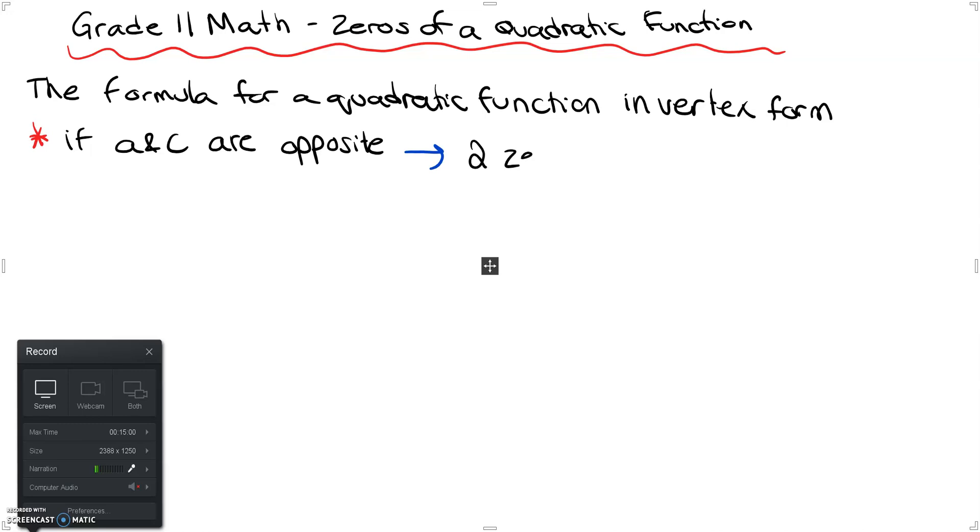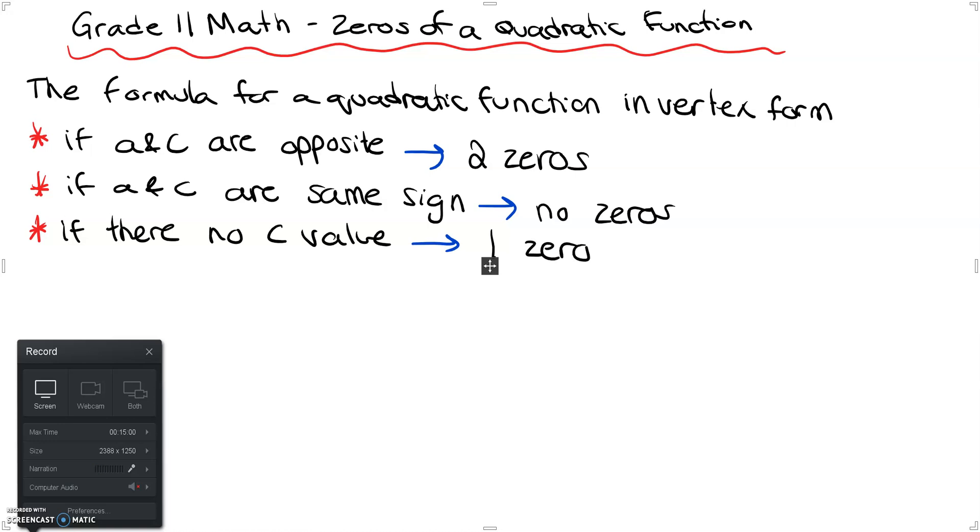When I say opposite I mean they are opposite signs. And then moving on to case two, if a and c are the same sign then we have no zeros. And then in our last case we have case three, and if there's no c value we will have one zero.